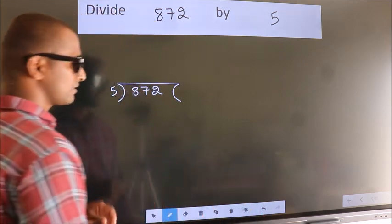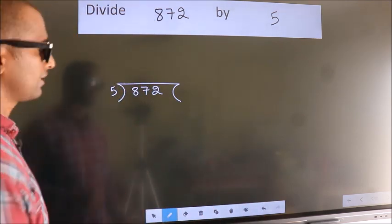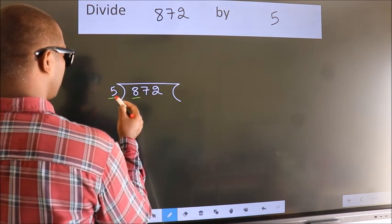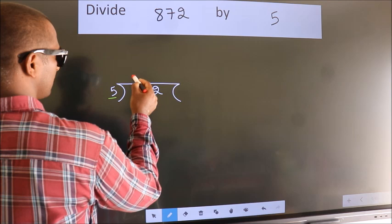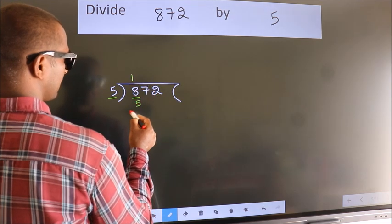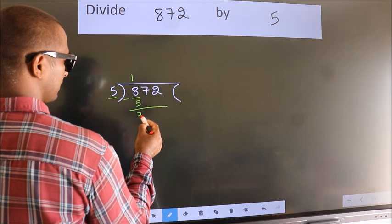This is your step 1. Next, here we have 8, here 5. A number close to 8 in the 5 table is 5 once, which is 5. Now we should subtract. We get 3.